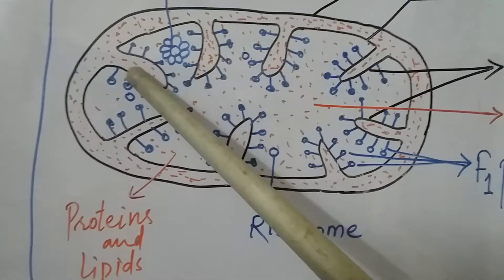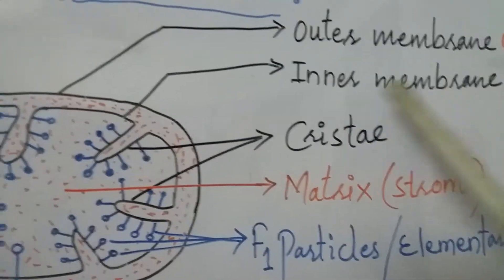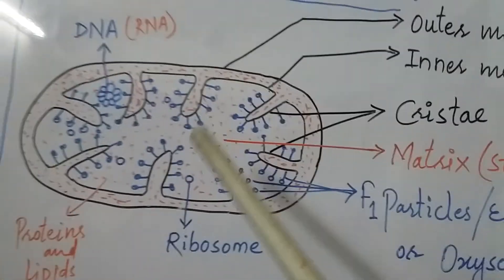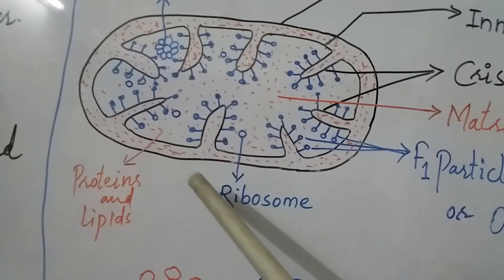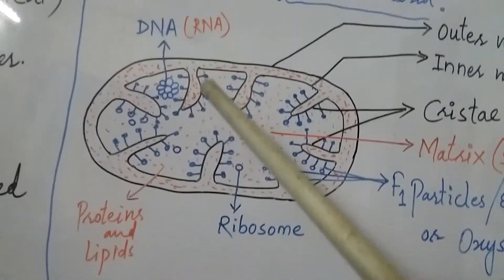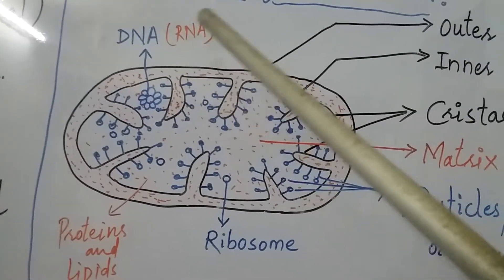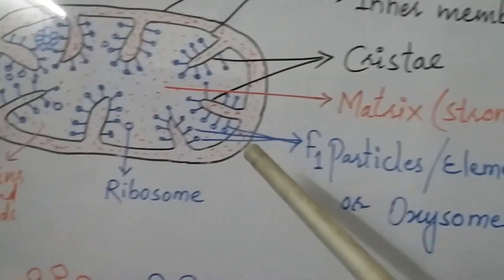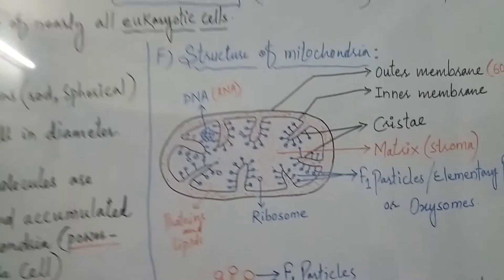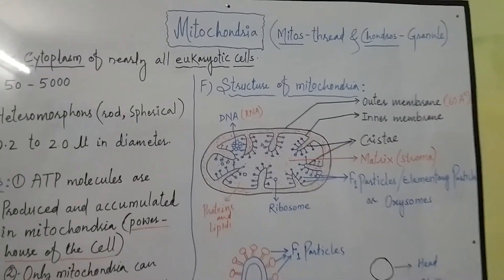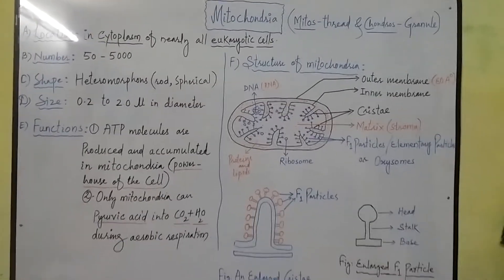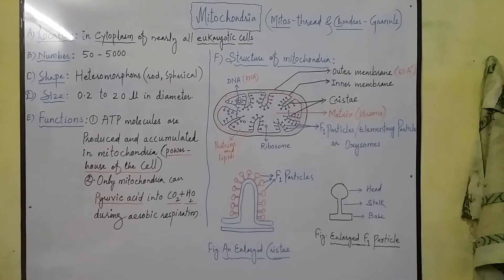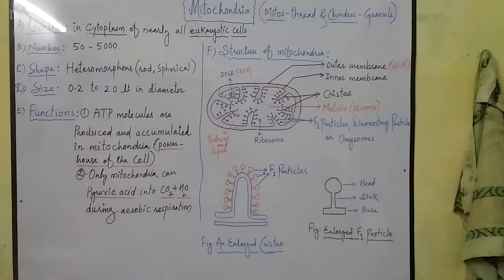To summarize the structure: inside the mitochondria there are 70S ribosomes, proteins, lipids, one or two circular DNA and RNA molecules in the matrix. There is an outer membrane, and F1 particles on the cristae. This is about mitochondria — the powerhouse of the cell and the most important cell organelle of eukaryotic organisms.